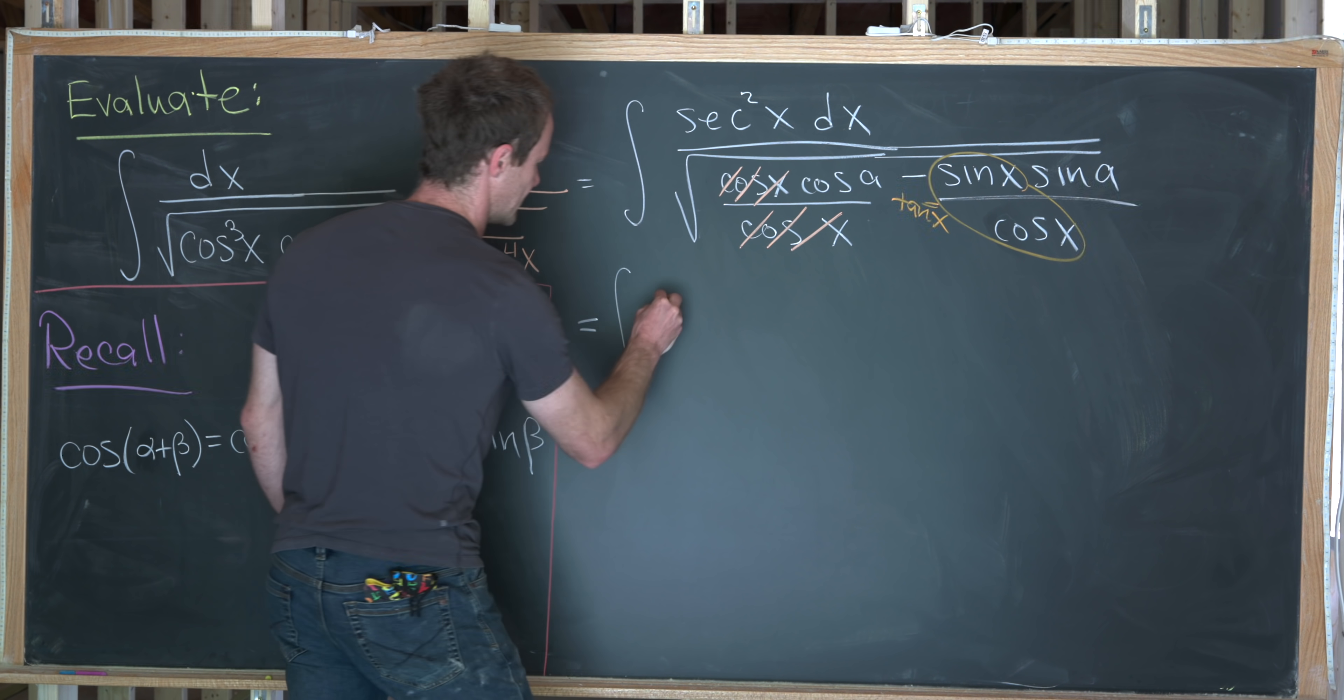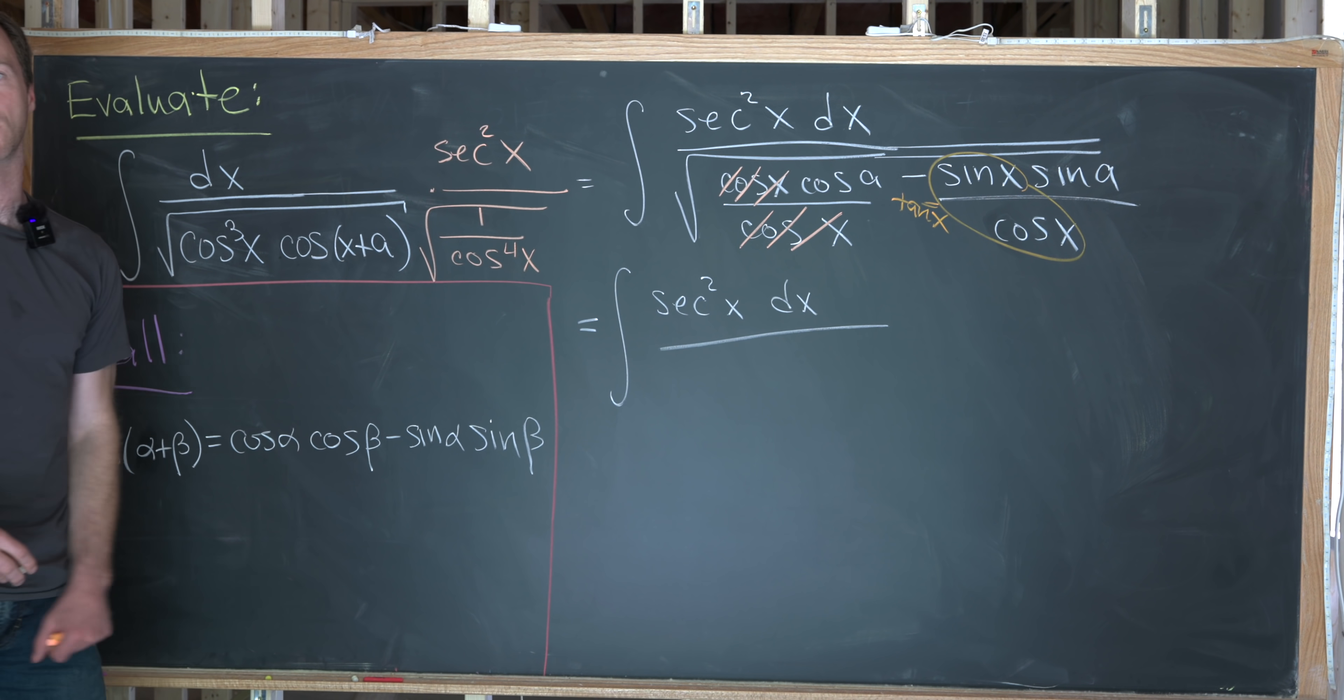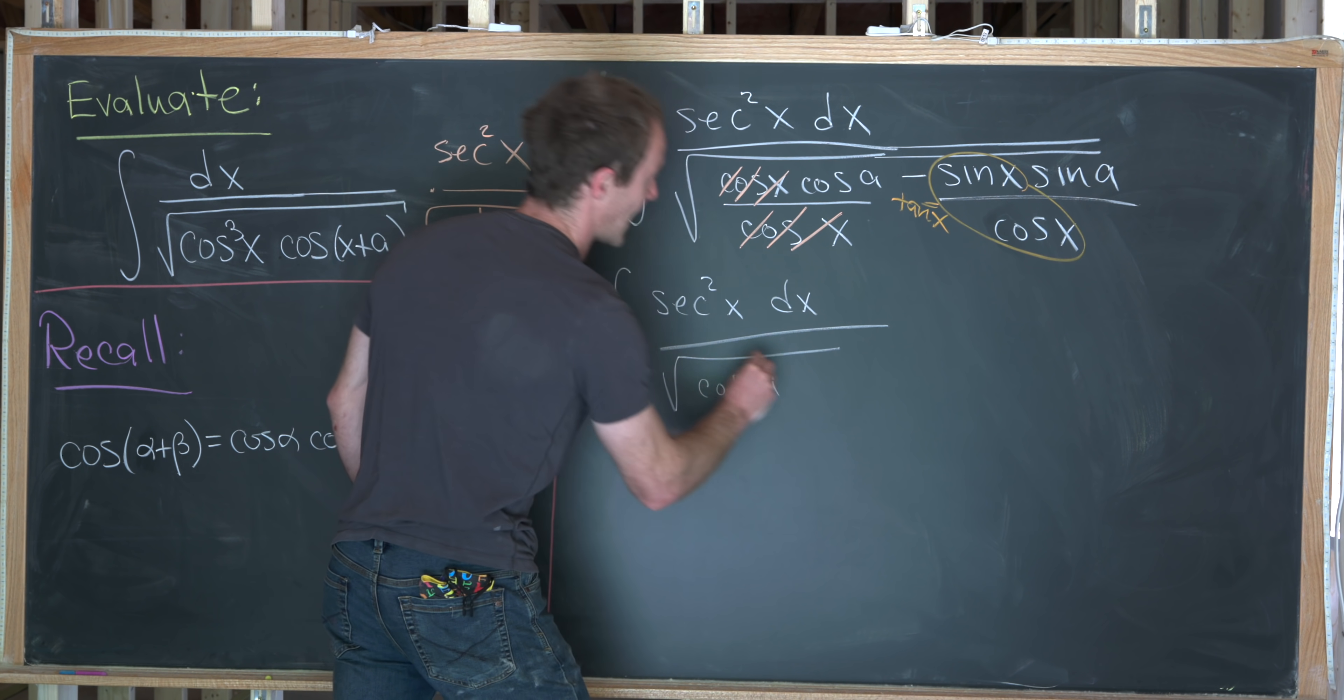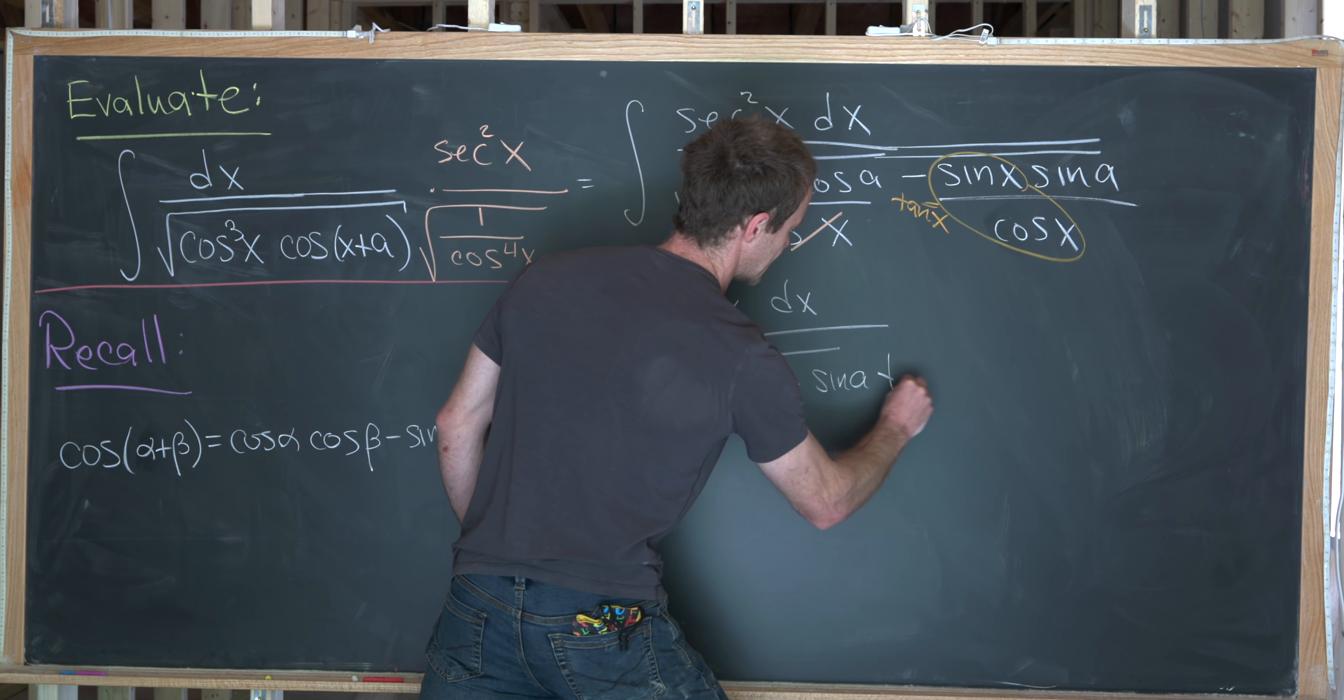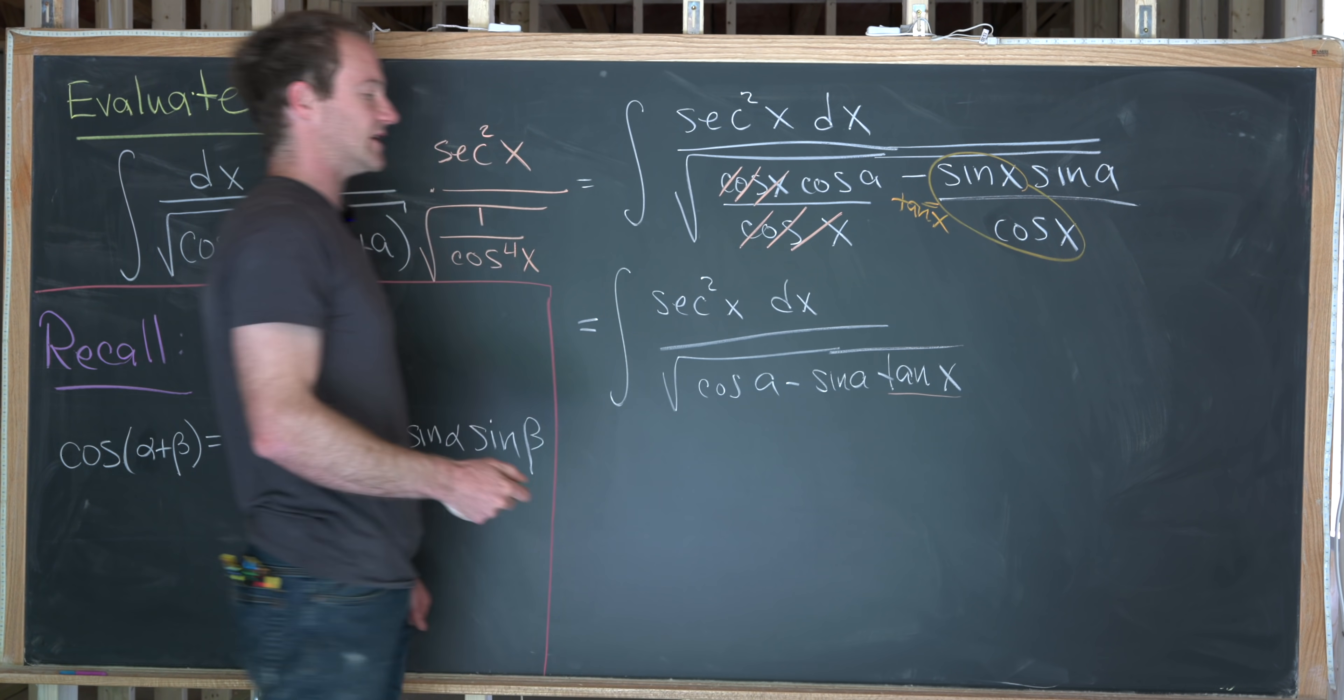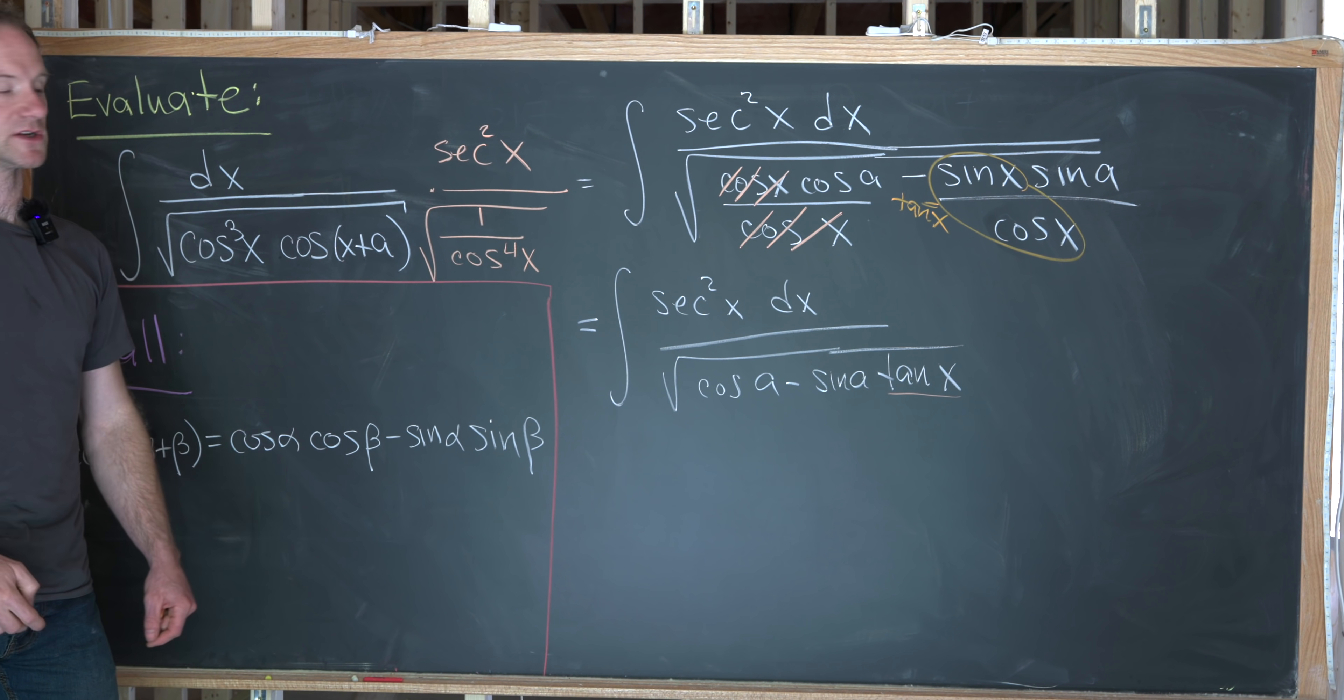We've got the antiderivative. We've got a secant squared of x dx in the numerator. Well, really, the dx is part of taking the antiderivative. And then downstairs, we have the square root of cosine of a minus sine of a times tangent of x. I want to notice that this tangent of x is the only thing that has a variable in the denominator. Cosine of a is a constant and sine of a is also a constant.